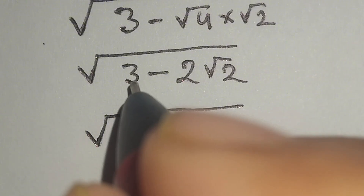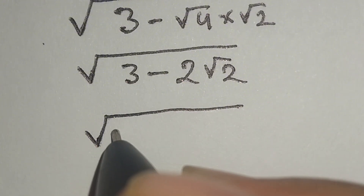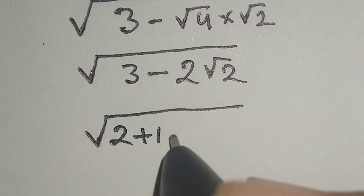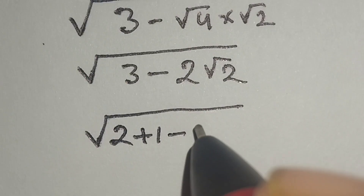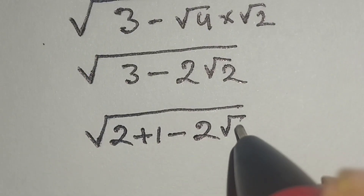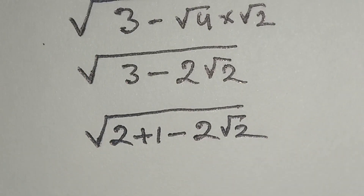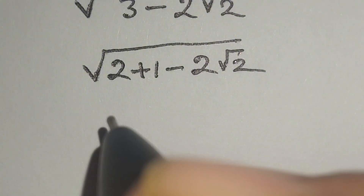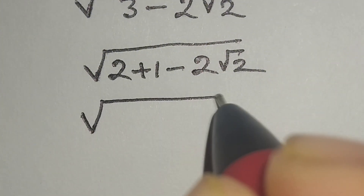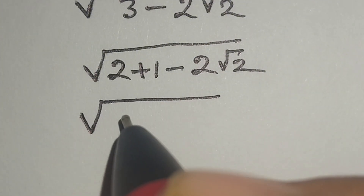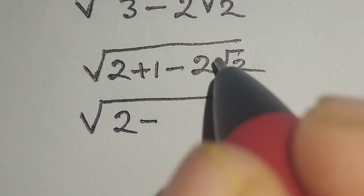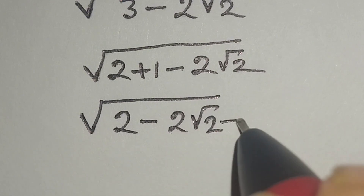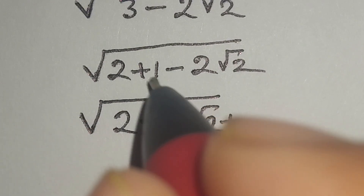Here, 3 can be written as 2 plus 1, so we get square root of 2 minus 2 square root of 2 plus 1.